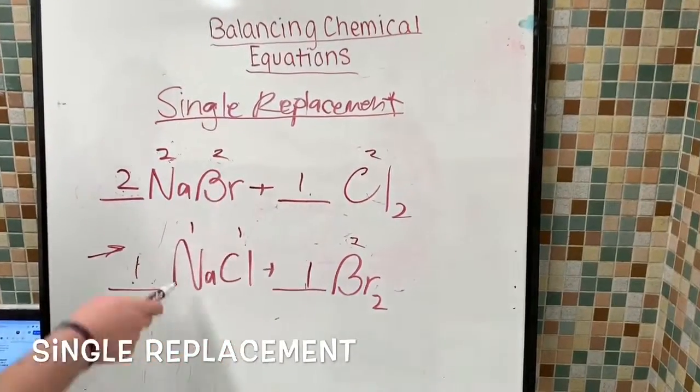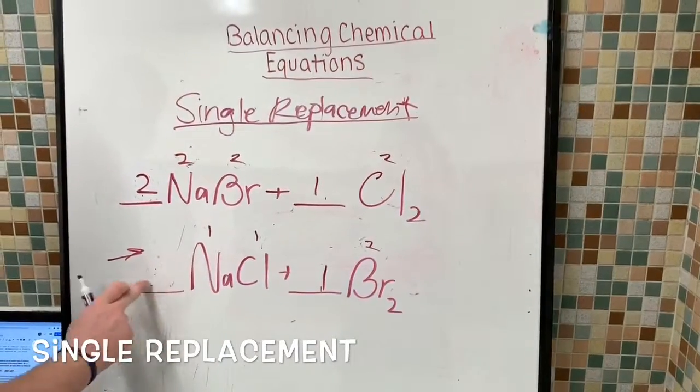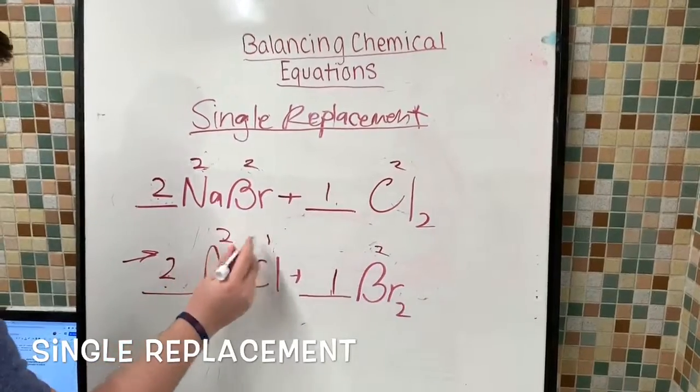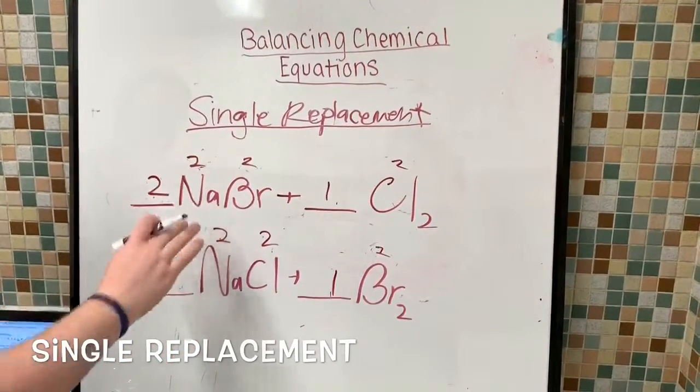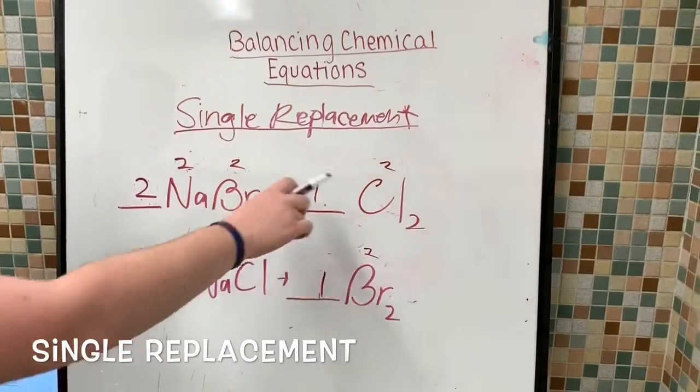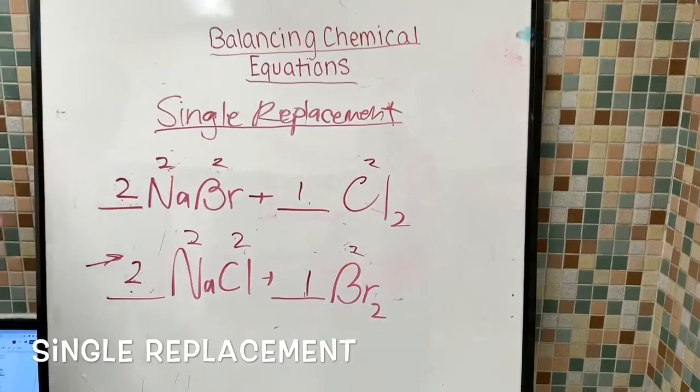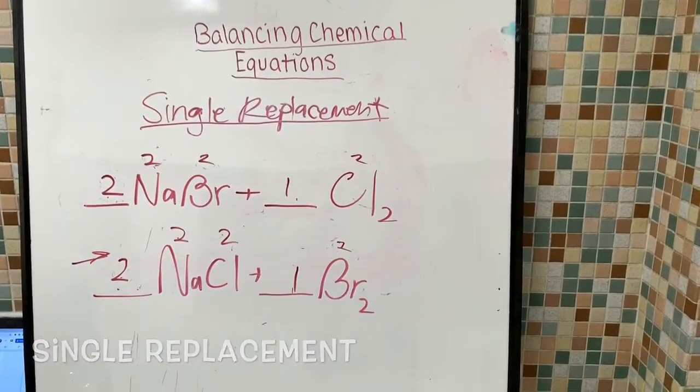The Brs now are equal but the Nas are not. So now you have to revert back to the product and change this to a two which changes this Na to a two and this Cl to a two. Now that you know that the Nas and the Brs are balanced you next need to check the Cl. There's two Cls here and two Cls here. The product and the reactant are both equalized so we're all done.